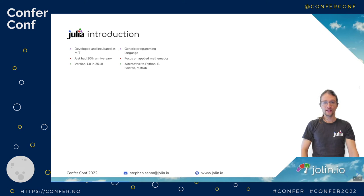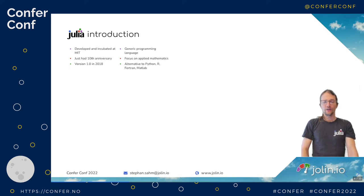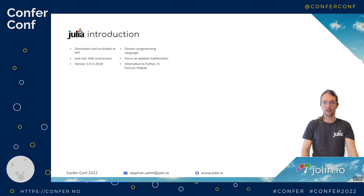Julia was developed and incubated at MIT. It just had its 10th anniversary and since 2018 it's version 1.0 — stable and production ready. You have to think about Julia as a generic programming language, but with a strong focus on applied mathematics. You have all the syntax support you want if you use math. And you can plug and play it for Python or Fortran or MATLAB — these are kind of the standard interop tips.